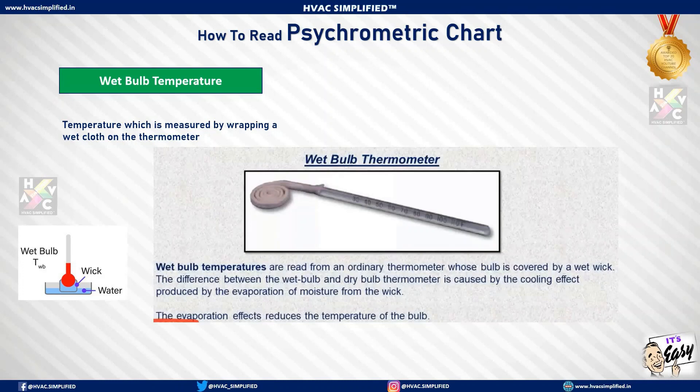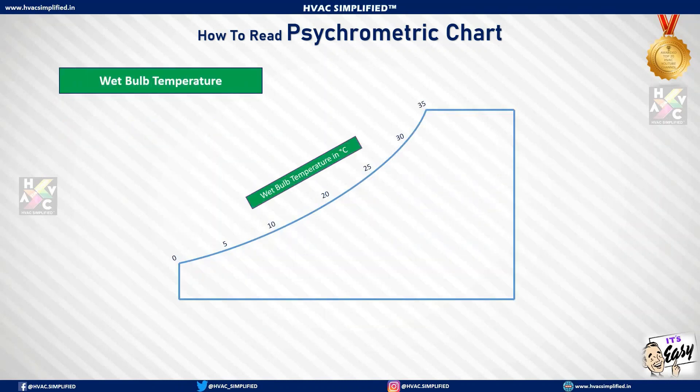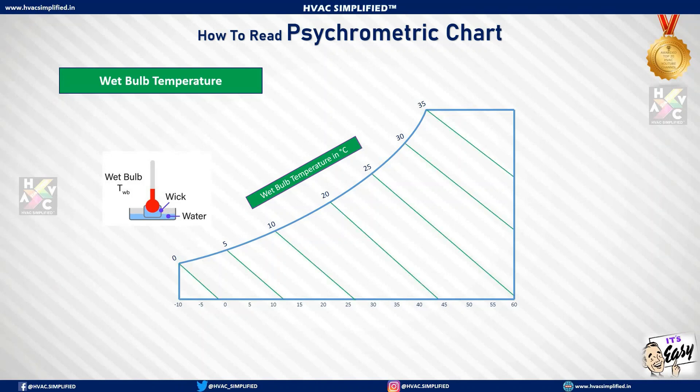The dry bulb thermometer is wrapped by a wet wick and the temperature is measured to obtain the wet bulb temperature. On the psychrometric chart, wet bulb temperatures are measured in degrees centigrade. The inclined line represented in green color is known as the wet bulb temperature line on a psychrometric chart.